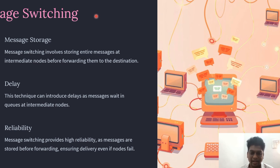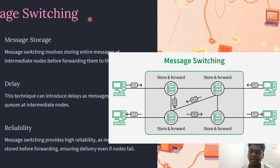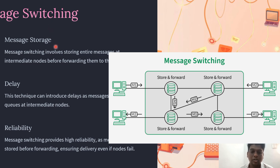In message switching, before forwarding the data to the destination, the entire messages are stored at the intermediate nodes present in the network. This can sometimes introduce delay, as messages wait in a queue at the intermediate nodes. However, this method provides high reliability — even if nodes fail, it maintains a high level of reliability. An advantage is that data channels are shared among communicating devices, improving bandwidth efficiency.